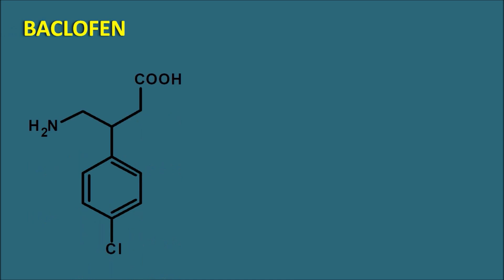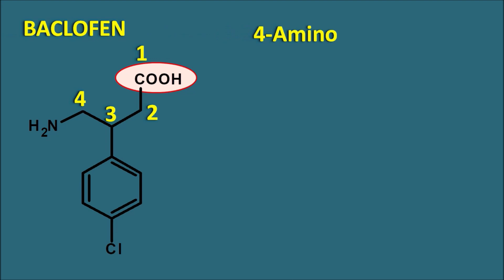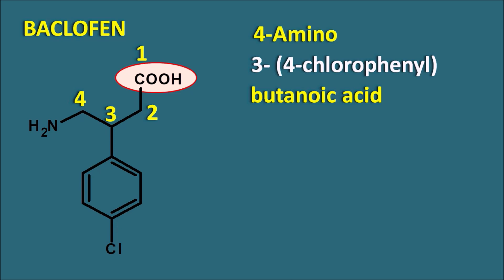The first drug is baclofen. Its structure resembles GABA — it has a carboxylic acid group, and numbering the chain 1-2-3-4, the fourth position carries an amino group, making it 4-aminobutanoic acid, which is gamma-aminobutyric acid (GABA). However, baclofen has a substitution at the third position: a para-chlorophenyl group. So baclofen is a modified GABA structure with para-chlorophenyl substitution at position 3, acting as a GABA-B receptor agonist producing inhibitory effects on motor activity.